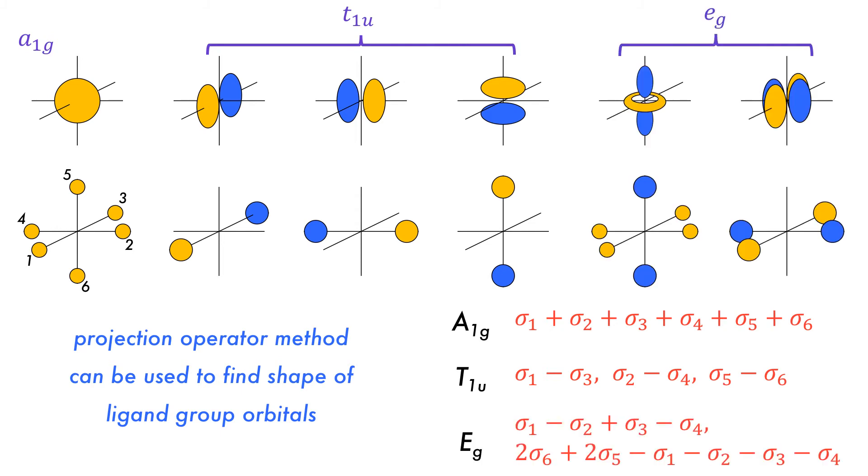The final set is the eg set, which allows interaction along the Cartesian axes. The proper symmetry adapted linear combinations are shown here as 1-2, plus 3-4, in order to have the correct symmetry of the dx squared minus y squared orbital. The unusual group orbital 2 times 6 plus 2 times 5 minus 1 minus 2 minus 3 minus 4 has double the contribution from 5 and 6 in order to properly interact with the dz squared orbital. Remember that all the results shown here can be determined explicitly using the projection operator method and normalization.